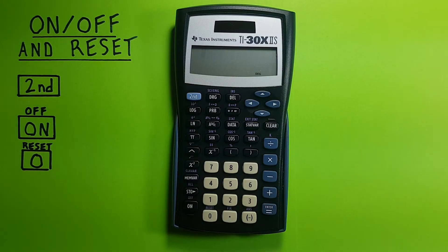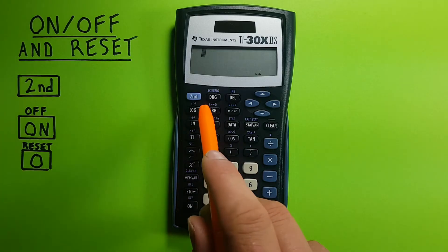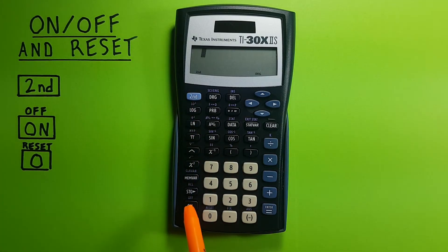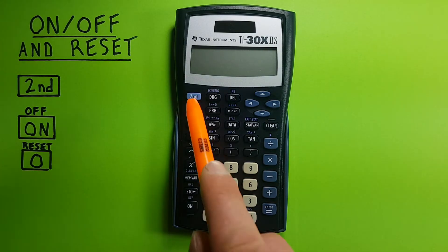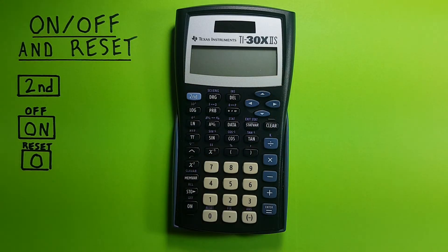If we want to turn it off, if we're done using it and want to save the battery, we go second function, and then the on key. This will turn our calculator off, you'll see nothing on the screen, and the battery will be saved.